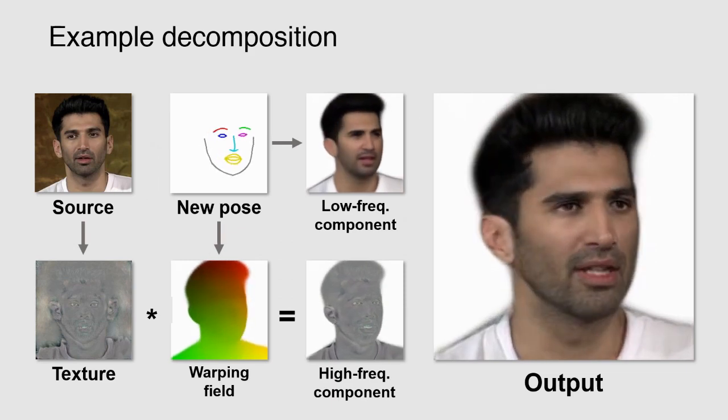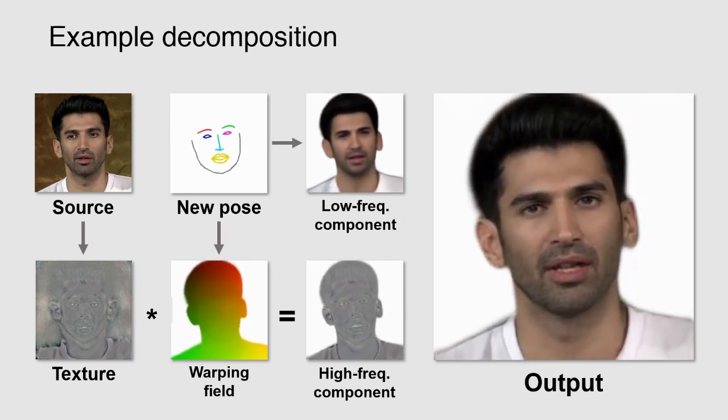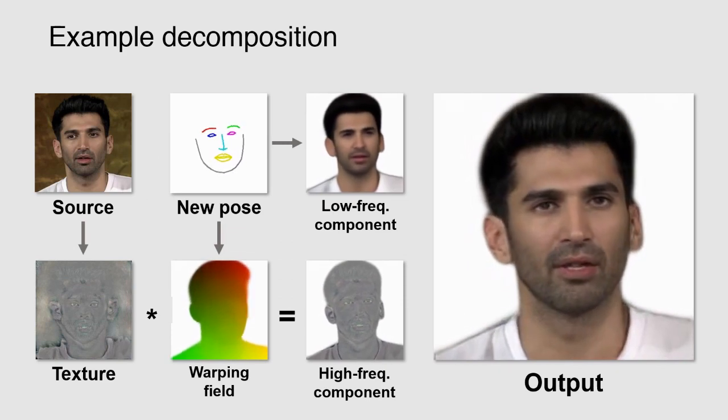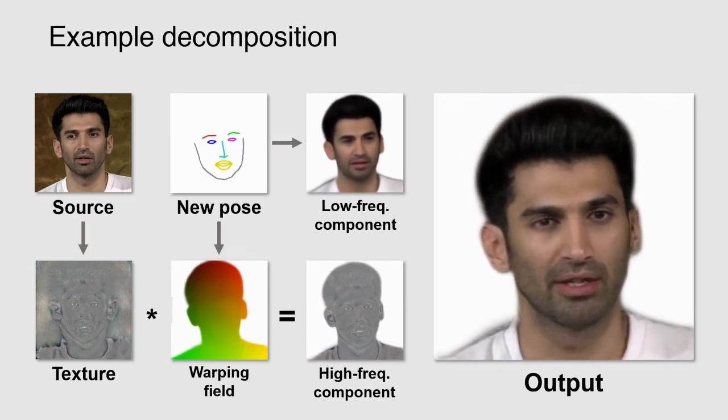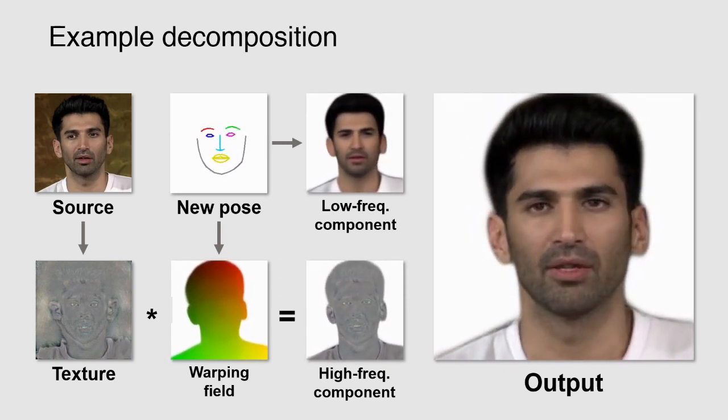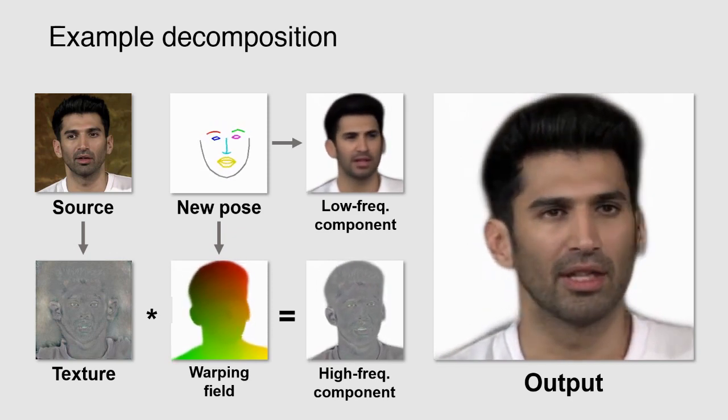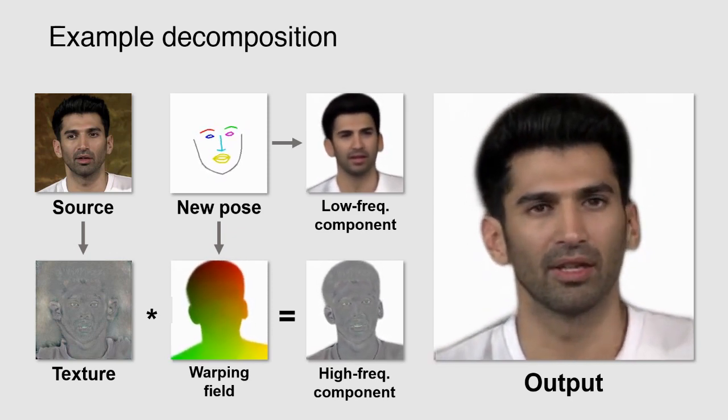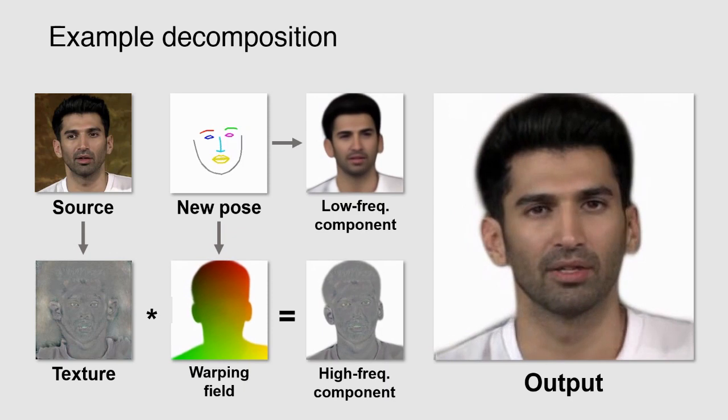These two networks are effectively used to predict different layers of the output image, as can be seen from the example here. We also achieve some degree of disentanglement in terms of head pose of the texture and the source image, which helps our model to extrapolate onto unseen view angles.